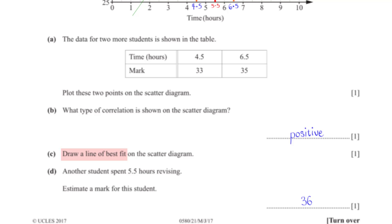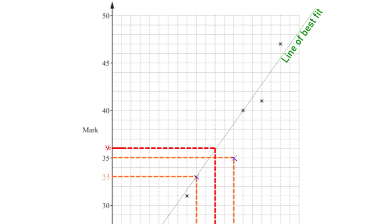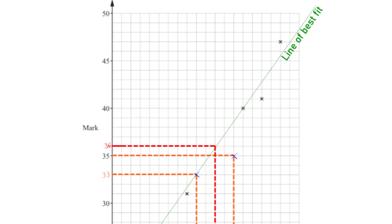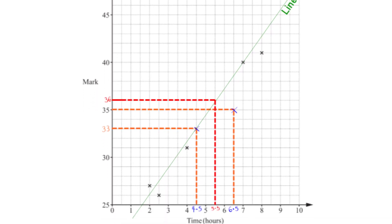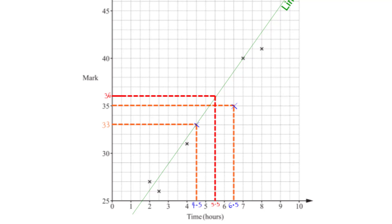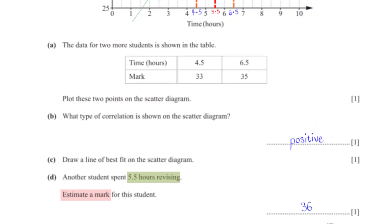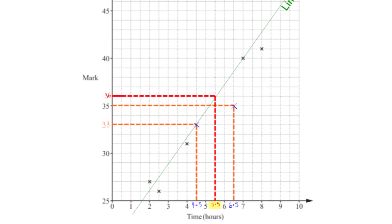Draw a line of best fit on the scatter diagram. The rule of thumb is to draw the line through the maximum number of points while balancing equal numbers of points above and below. Another student spent 5.5 hours revising; using the line of best fit, the estimated mark is 36.